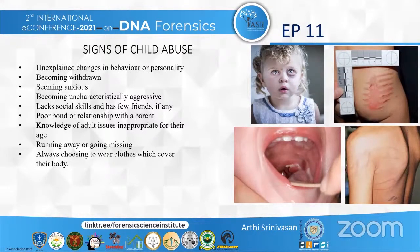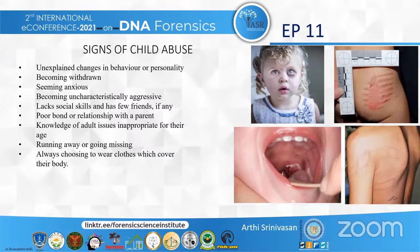Signs of child abuse include unexplained changes in behavior or personality, becoming withdrawn or anxious, becoming uncharacteristically aggressive, lacking social skills and having few friends, poor bond or relationship with a parent, knowledge of adult issues inappropriate for their age, running away or going missing, and always choosing to wear clothes that cover their body. Various studies have proved that 70 percent of all physical injuries from abuse are located in the head and neck region, meaning dentists are more likely to be confronted with abuse-related injuries, which can be observed intraorally or extraorally. Dental professionals therefore have a major role in the investigation of abuse cases.